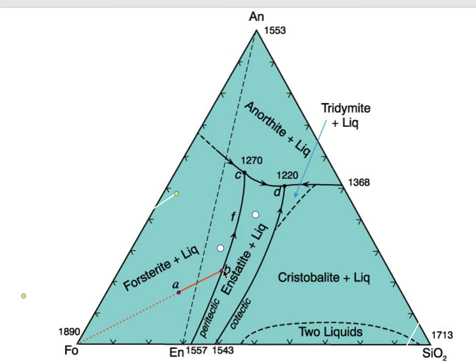As the liquid moves this way, it's eating into the forsterite and converting it to enstatite. Sometimes that reaction is shown with two arrows instead of one. And that liquid will eventually get to C.